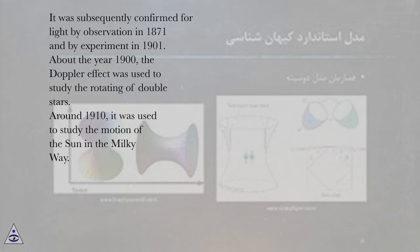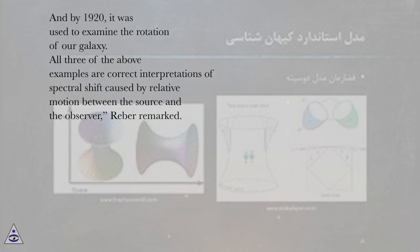About the year 1900, the Doppler effect was used to study the rotating of double stars. Around 1910, it was used to study the motion of the sun in the Milky Way. And by 1920, it was used to examine the rotation of our galaxy.